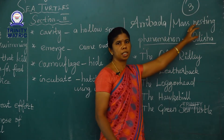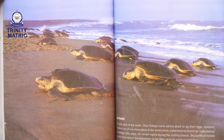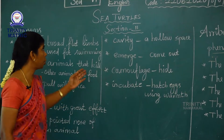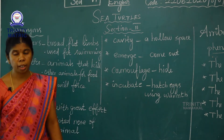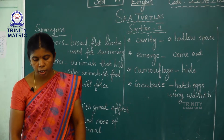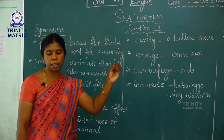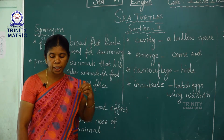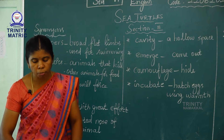Today we are going to study section two. Look at this picture — this is a picture of aribada or mass nesting. In section two we are going to see what happened to the sea turtles after section one. Between the months of January and March, female olive ridleys come ashore at night to lay eggs on the sandy beaches. This is quite a problem for them.